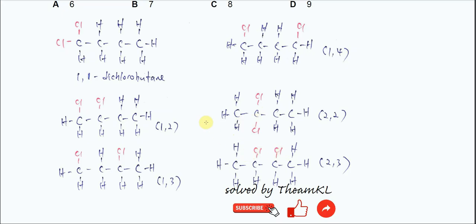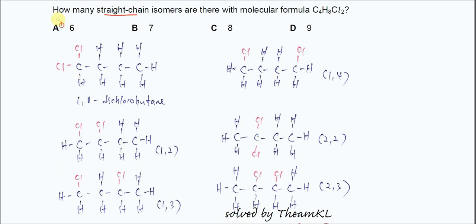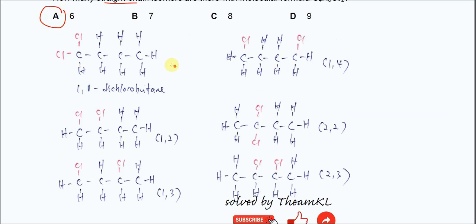So these are the possible structural isomers, and they are all straight chain. In total there are 1, 2, 3, 4, 5, 6 — so the answer is A. That's all, thank you.